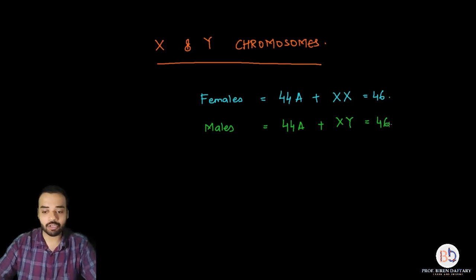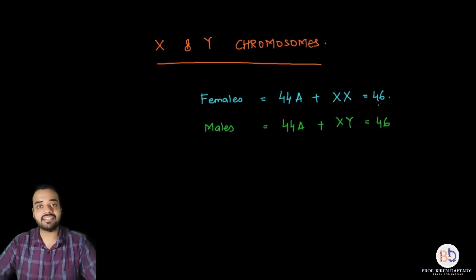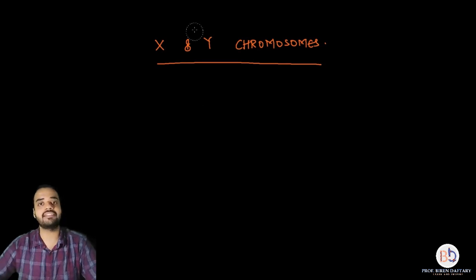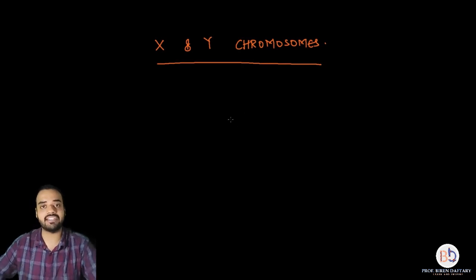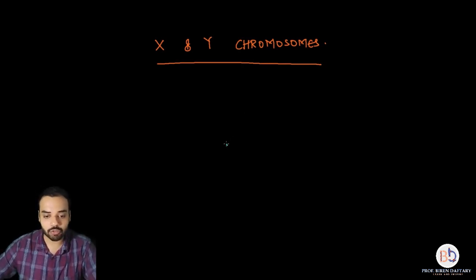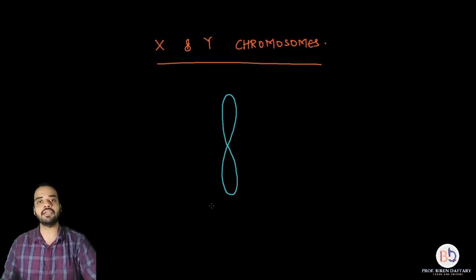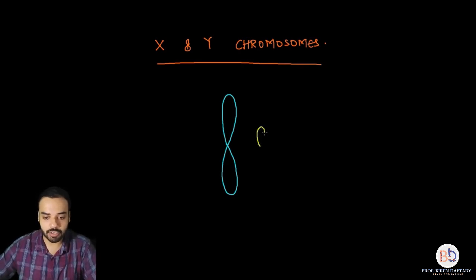So 44A plus XX is female, and 44A plus XY is male. Now let us have a look at the chromosomes which differentiate males and females — those are the X chromosome and Y chromosome. I'm going to draw the X chromosome in blue. The X chromosome is larger in size. And the Y chromosome is smaller in size — I'm going to use a different color, yellow, to draw the Y chromosome.